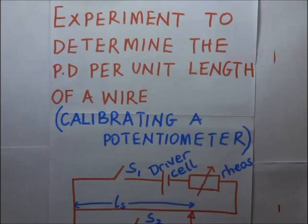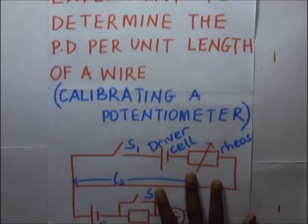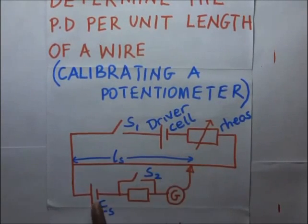In an experiment in determining the potential difference per unit length of the wire, that is in calibrating a potentiometer, we make sure first of all that our slide wire has got a uniform cross-sectional area. We also make sure that the EMF across the driver cell is greater than the EMF across the cell in the secondary circuit ES.